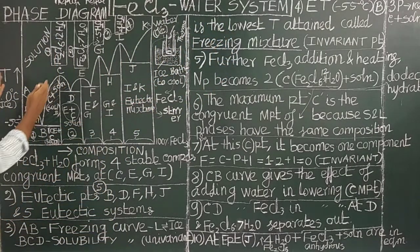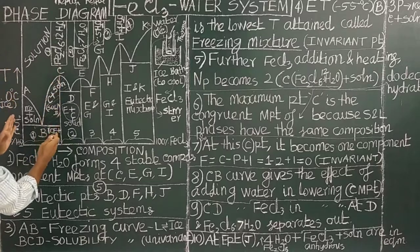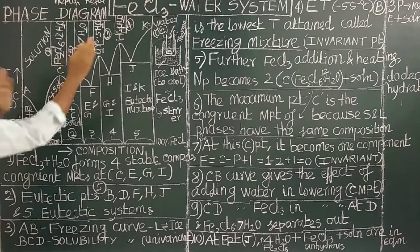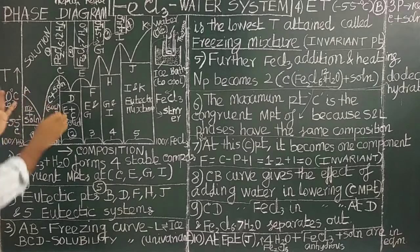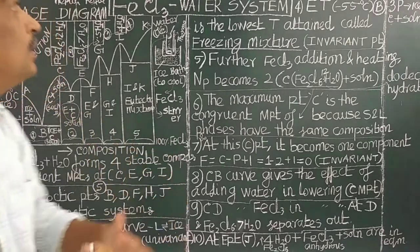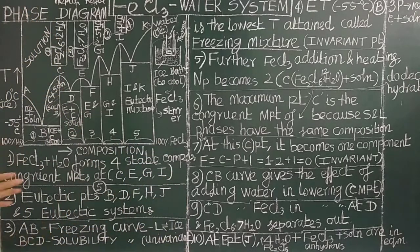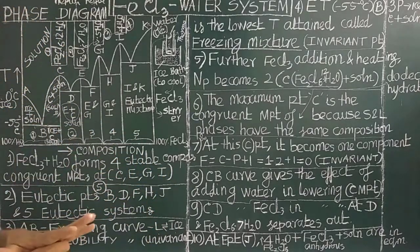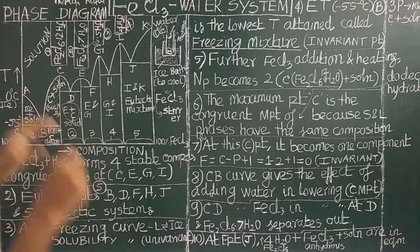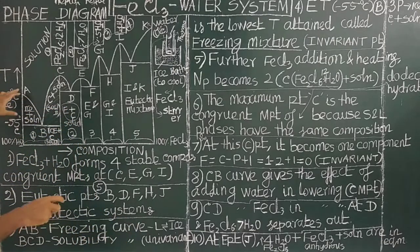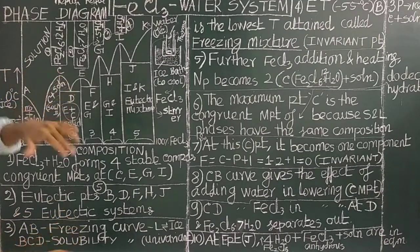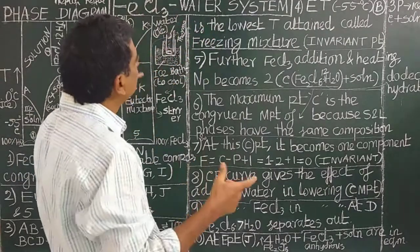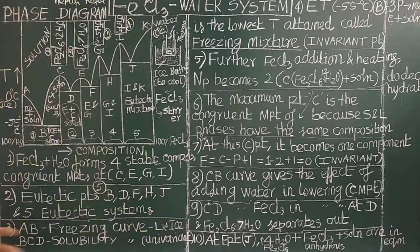If you look at the phase diagram of the potassium iodide-water system, they have similar features. Both have similar features. So please study the potassium iodide-water system very well. If you understand potassium iodide — what components are present, what phases are present — then you will be able to study the ferric chloride-water system very easily.